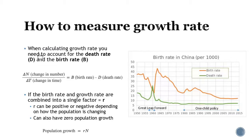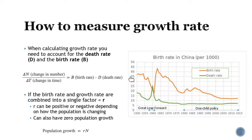But how do we measure growth rates? You have to account for both the death rate and the birth rate. So we do the change in number over the change in time, and that equals birth rate minus death rate. We combine that into one factor called R. Depending on whether R is positive or negative, the population is growing or shrinking — you can even have zero population growth. This graph measures birth rate and death rate for China and links to the one-child policy they enacted and later took back. They noticed the death rate wasn't increasing much, but the birth rate had a huge increase, so the overall population was growing a lot. That's when they enacted the one-child policy.